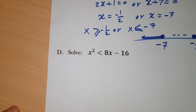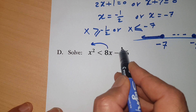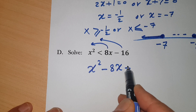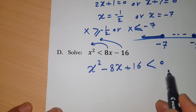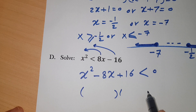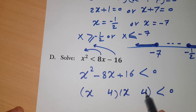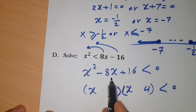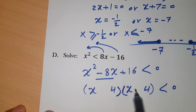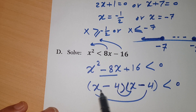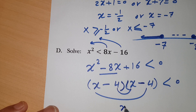Last one: x² < 8x - 16. Rearrange by bringing everything to the left: x² - 8x + 16 < 0. Factorize — this is a perfect square. 16 is 4 times 4, and the middle term gives -4x - 4x = -8x. So it's (x - 4)² < 0, meaning x - 4 = 0 and x = 4 is the only root.